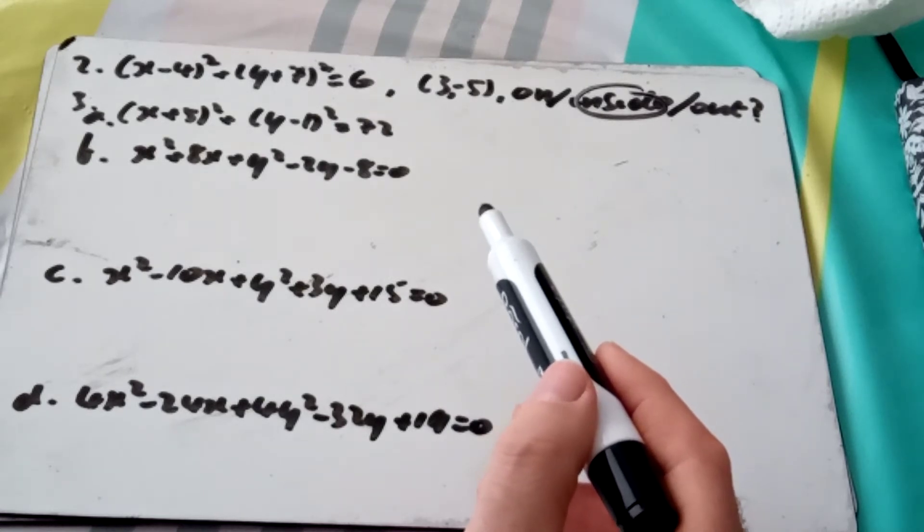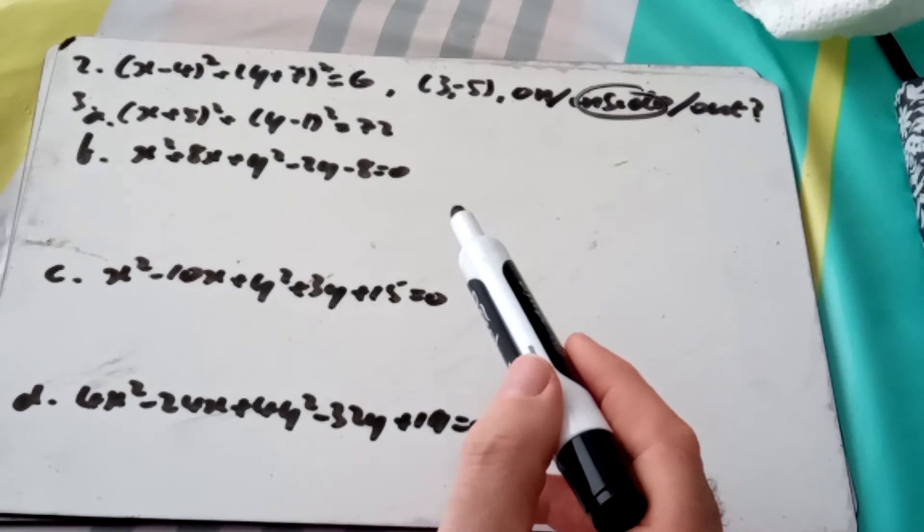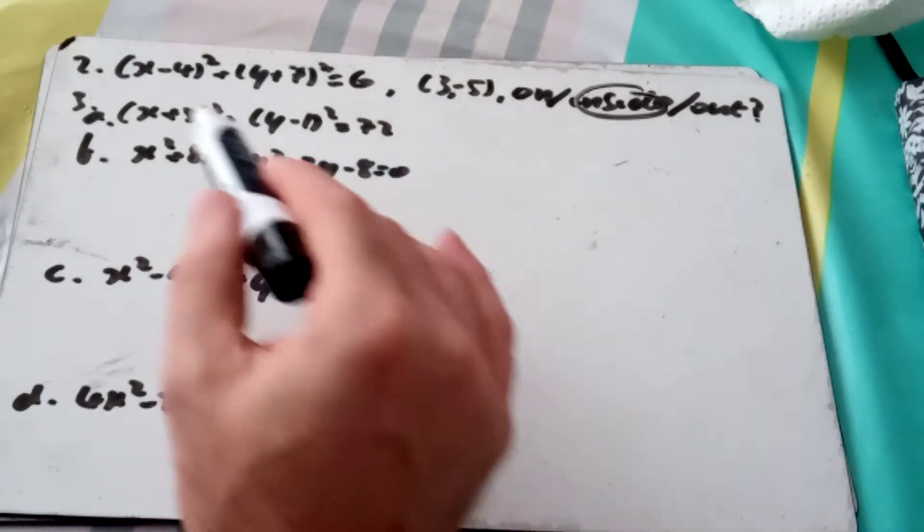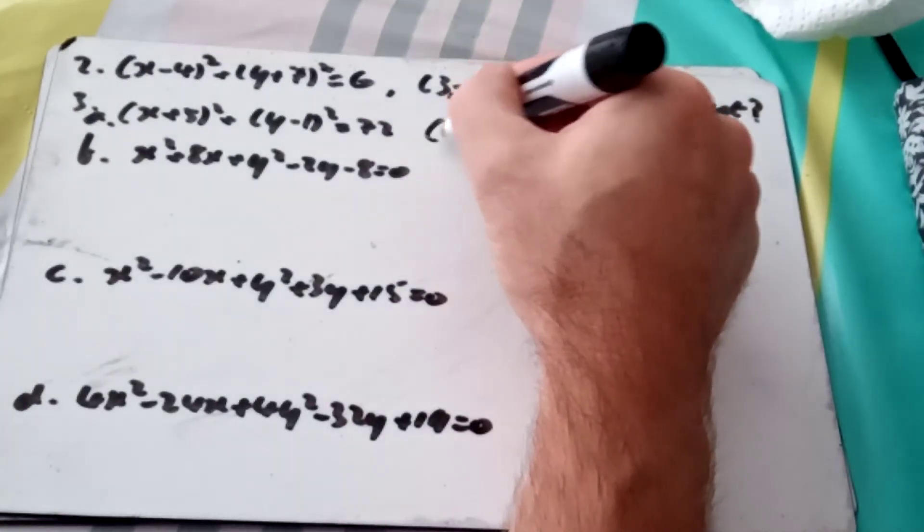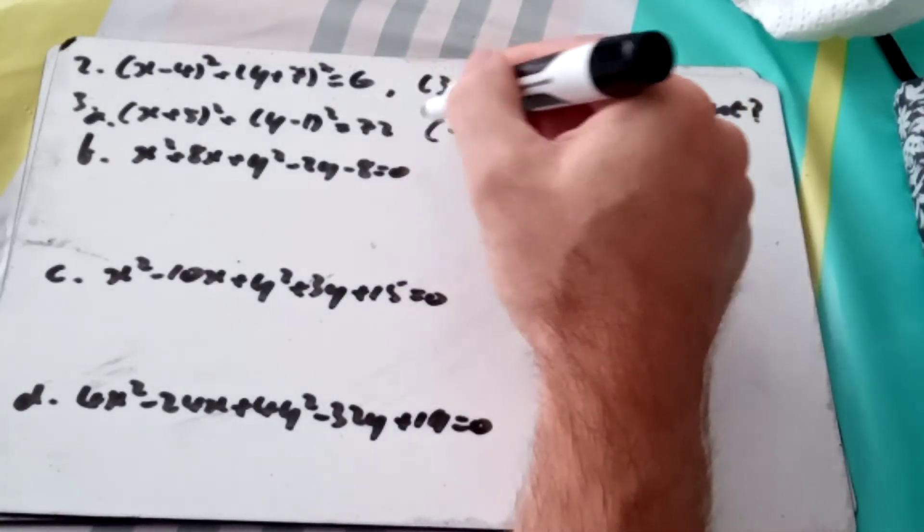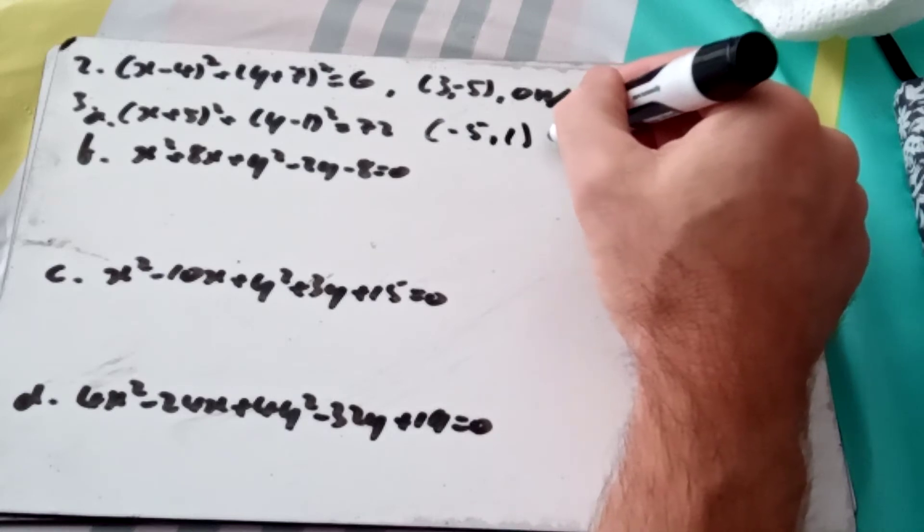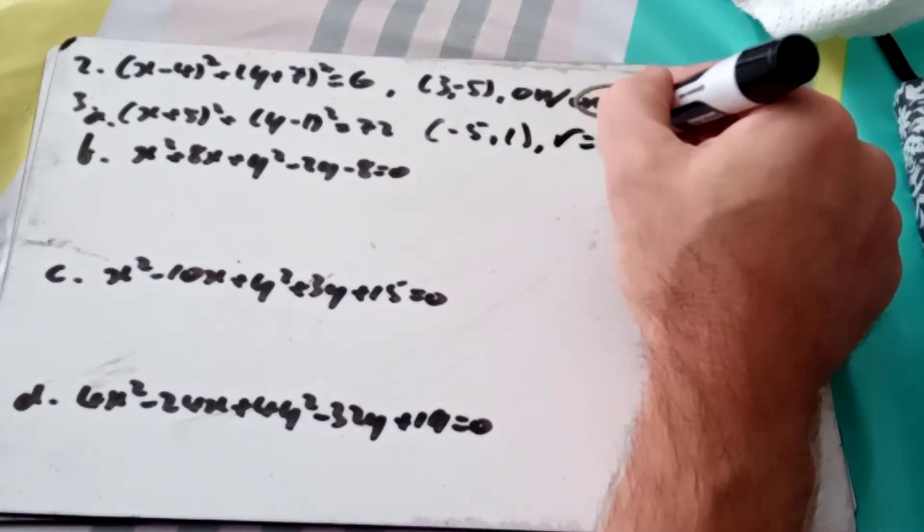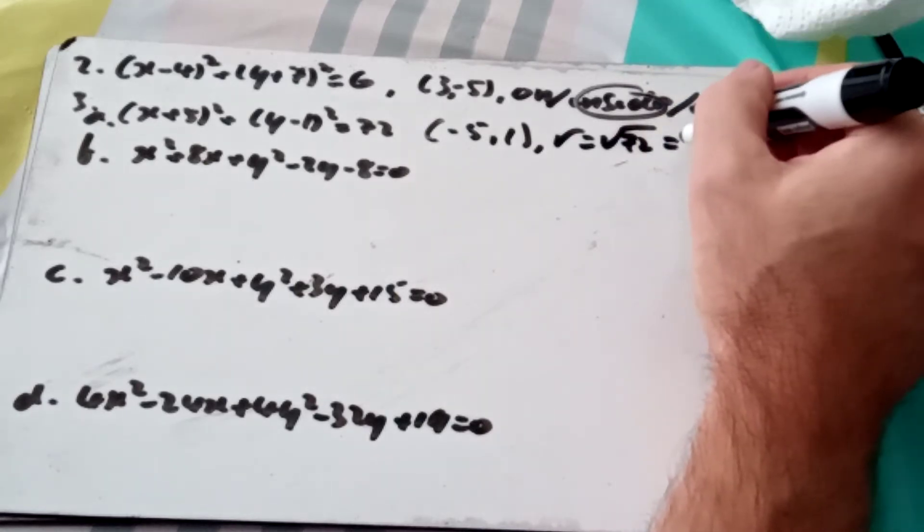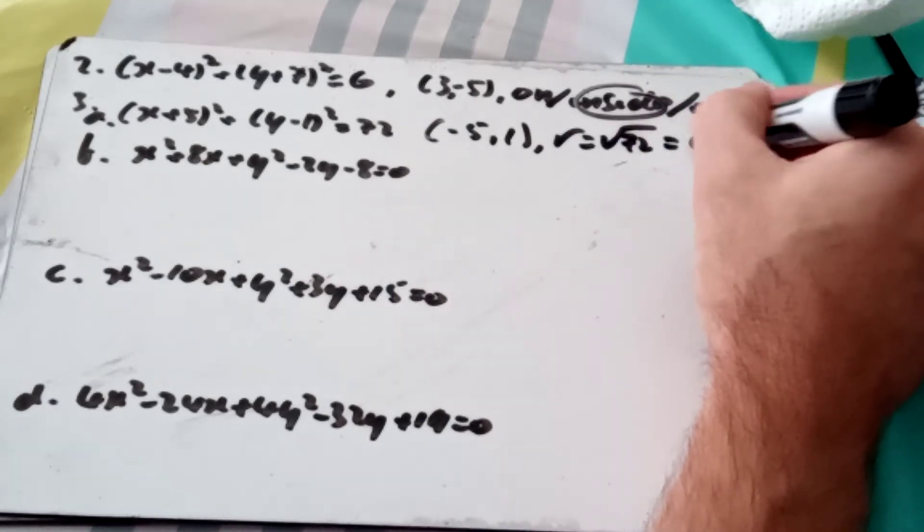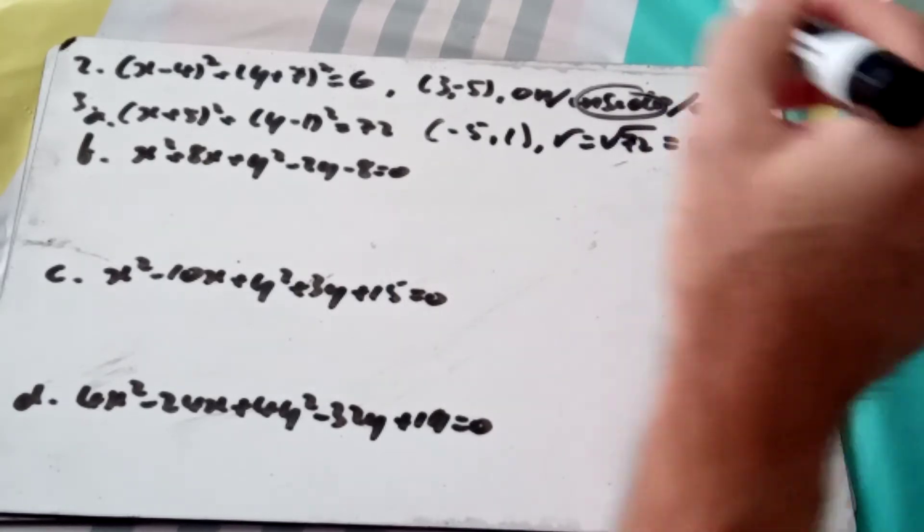When we're given the equation of a circle, we can read off the center and the radius. So in this case, when it's given in this form here, I can say that the center is the point (-5, 1), the negative of the things in the brackets, and r will equal √72, and I need to do a little bit of surds work, √36 × √2, 6√2 as an exact value.